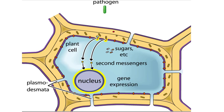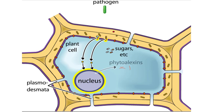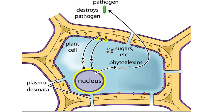After certain genes are expressed, the plant begins to produce a class of molecules called phytoalexins. Phytoalexins are usually phenolics or terpenes, and a cell produces them within hours of the onset of infection. These molecules can kill a variety of invading pathogen species.